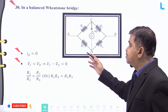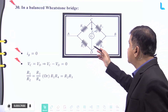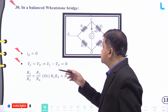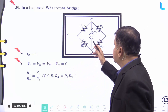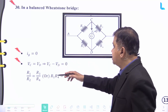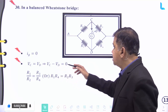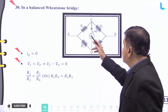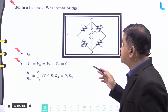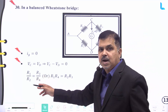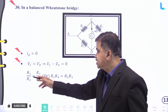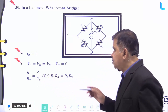In a balanced Wheatstone bridge of resistances R₁, R₂, R₃, and R₄, the galvanometer current Ig equals 0, and the potential at C equals the potential at D, implying V_C − V_D equal to 0. The principle is R₁/R₂ equal to R₃/R₄, or equivalently R₁ × R₄ equal to R₂ × R₃.